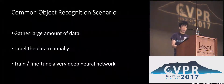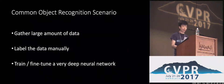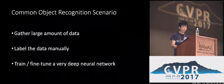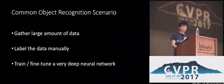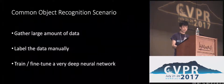However, the manual labeling stage is expensive and time-consuming, which cannot scale up when we expand the object categories from 1,000 to 10,000, or scale the number of images from 1 million to 1 billion.